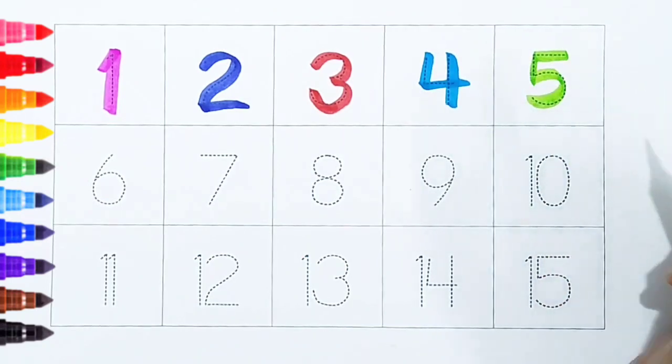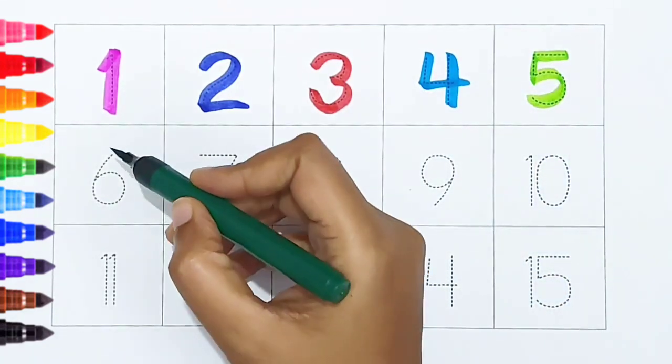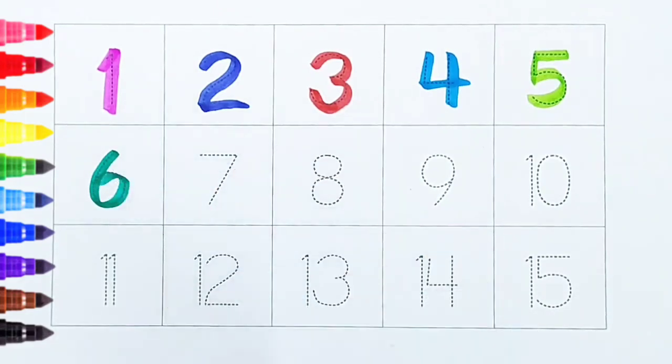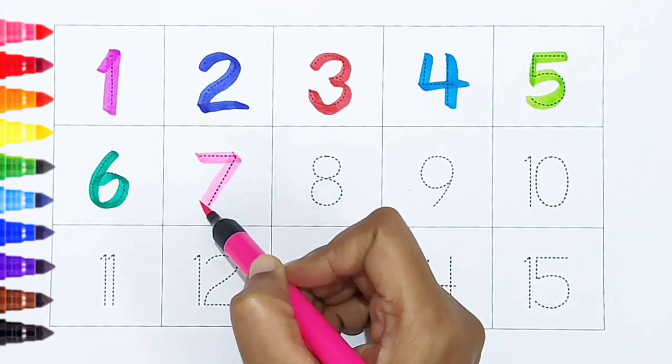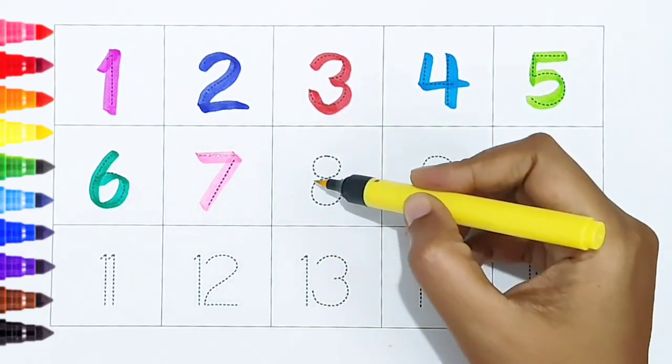Six, dark green color. Six, dark green color. Seven, light pink color. Seven, light pink color. Eight, yellow color.